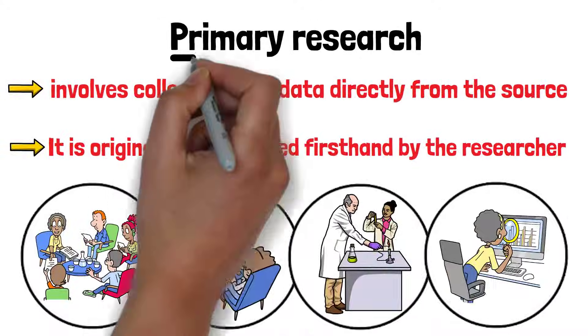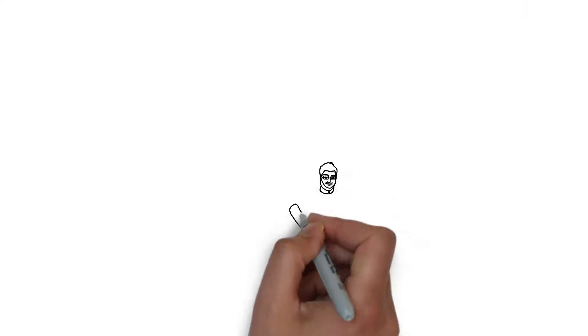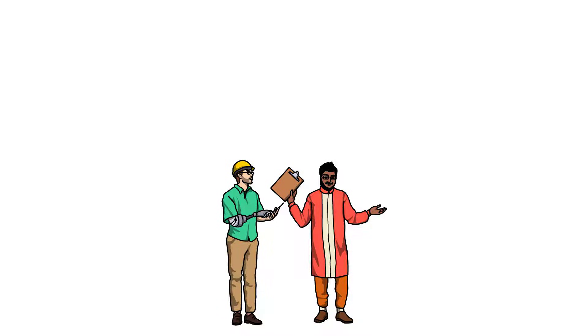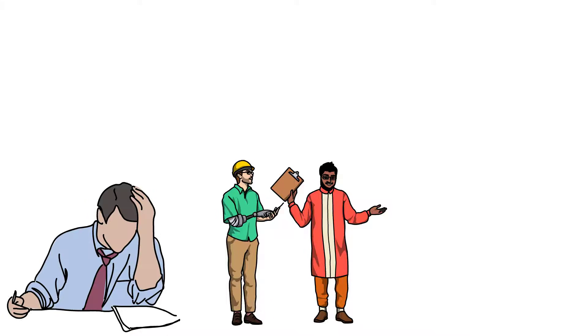Let's take a look at primary research first. Primary research is used when new information is needed that cannot be found in existing sources. Researchers collect this data specifically to answer their research question or explore a topic in more depth.